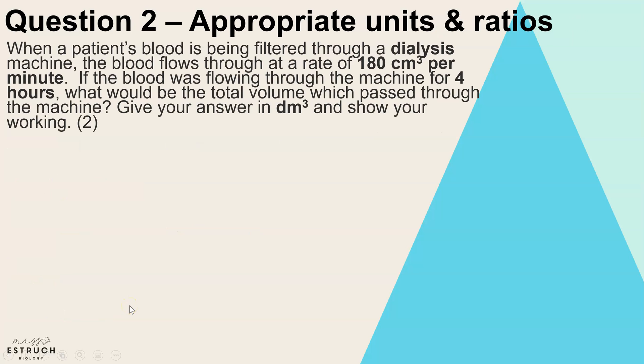Question two: appropriate units and ratios. When a patient's blood is being filtered through a dialysis machine, the blood flows through at a rate of 180 centimeters cubed per minute. If the blood was flowing through the machine for four hours, what would be the total volume which passed through the machine? And they've specified you have to give your answer in decimeters cubed.